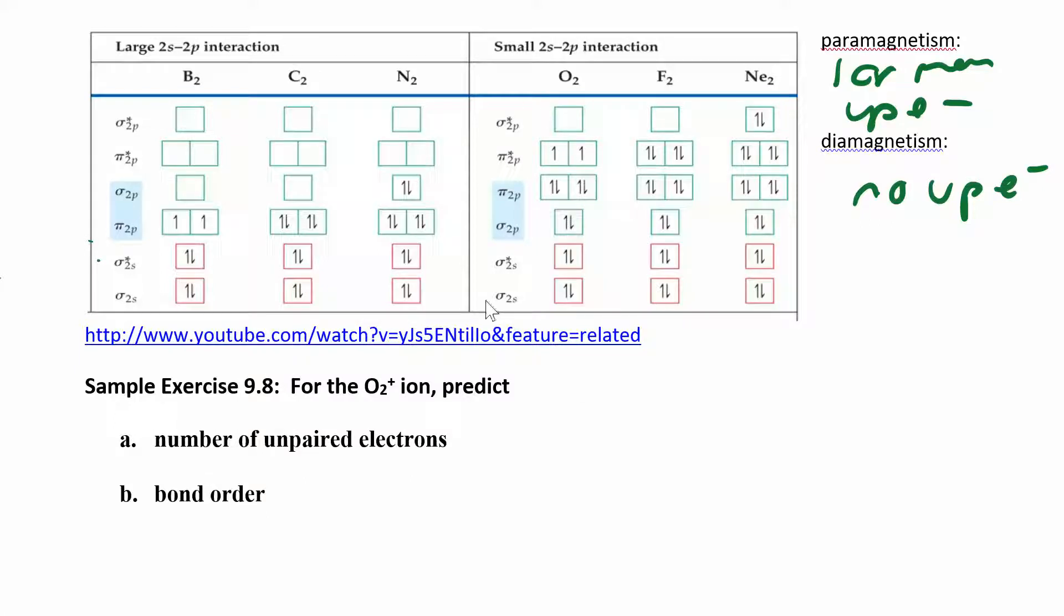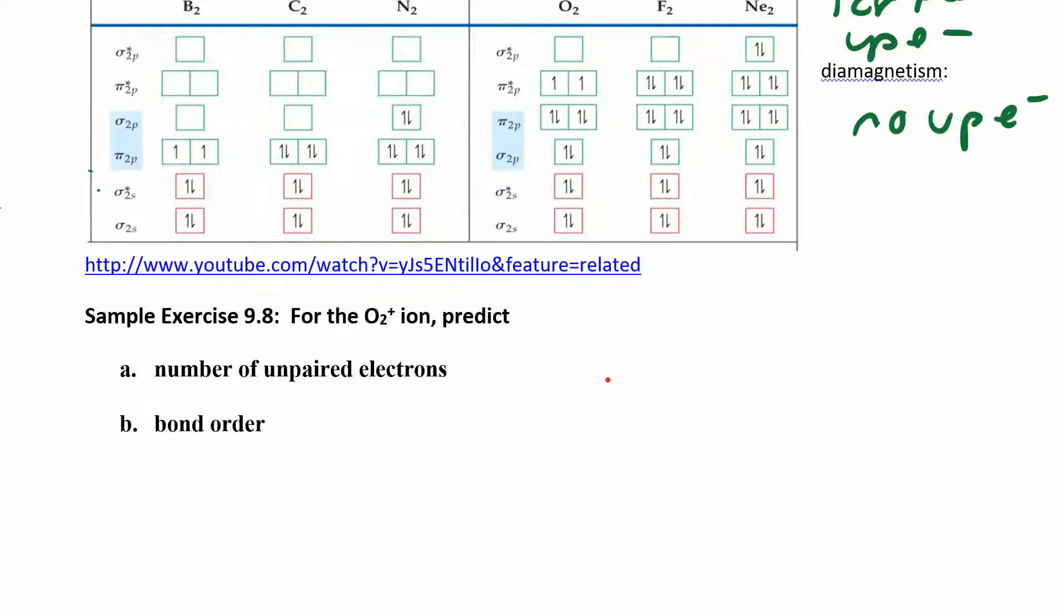We can start with this orbital diagram for O2 and redraw it here. We have sigma, sigma star, pi, pi star. Every other sigma is a star, every other pi is a star. Single lines are sigma, double lines are pi. So even without this diagram, you should be able to figure out: every other sigma is a star, every other pi is a star.